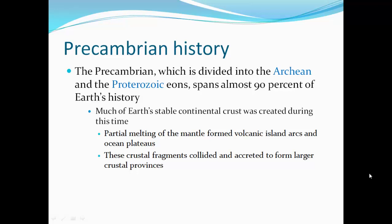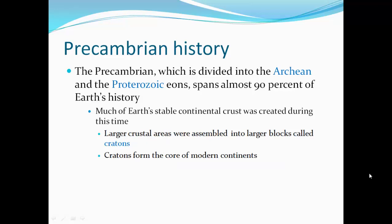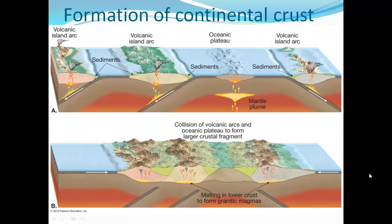Precambrian history: the Precambrian, which is divided into the Archean and the Proterozoic eons, spans almost 90% of Earth's history. Much of Earth's stable continental crust was created during this time. Partial melting of the mantle formed volcanic island arcs and ocean plateaus. These crustal fragments collided and accreted to form large coastal provinces. Large crustal areas were assembled into larger blocks called cratons, and these cratons formed the core of modern continents. These plates eventually collided to form large continents.